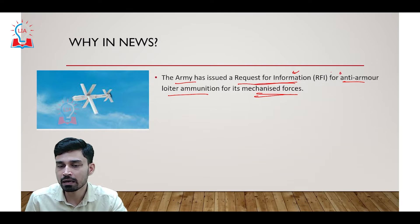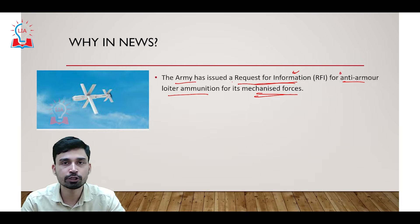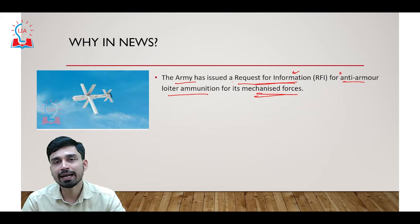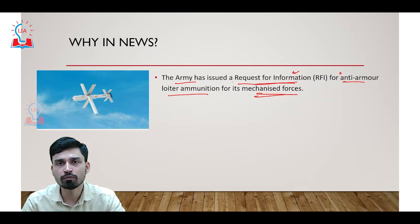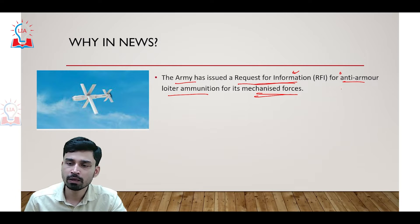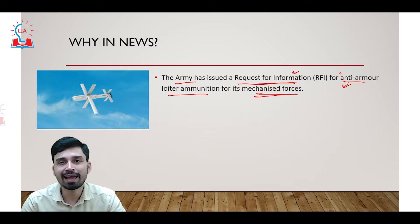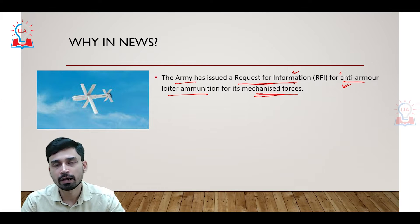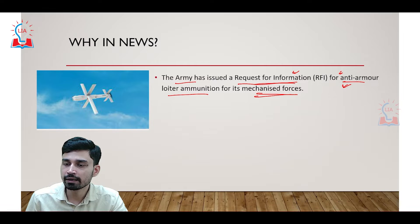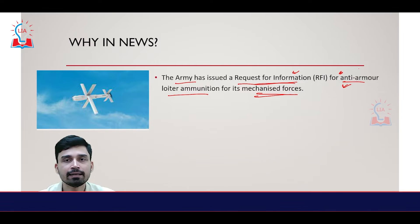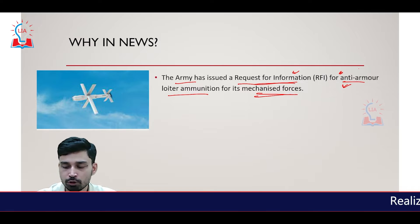Now, what is anti-armored loiter ammunition? It is a kind of ammunition which loiters around — that is, flies around — for a certain duration of time before attacking tanks or any other intended targets of the adversaries. That is why it is called anti-armored loiter ammunition.